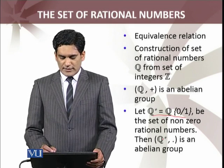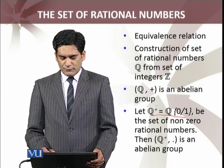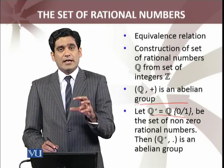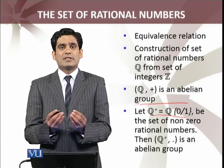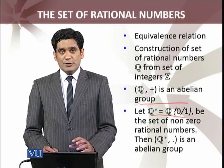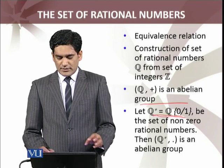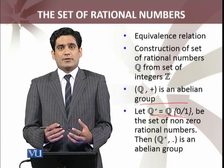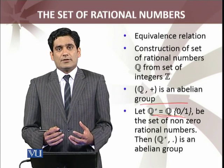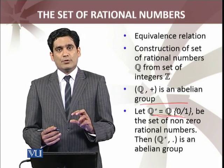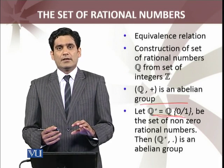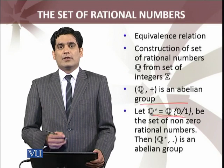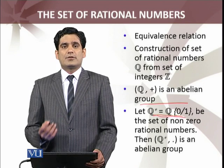Then I am going to construct the set of rational numbers from the set of integers. We will talk about the set of rational numbers under addition — I will show that it is an abelian group. Then I will show that the non-zero elements of the set of rational numbers form an abelian group under multiplication. I must define how to add and multiply members of the set of rational numbers. If Q under addition is an abelian group and the non-zero elements under multiplication form an abelian group, and the distributive law holds, then the set of rational numbers will be a field.